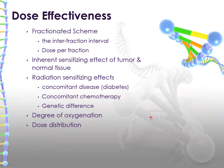Dose effectiveness depends on the fractionation scheme, the interfraction interval, dose per fraction, inherent sensitizing effect of tumor and normal tissue, radiation sensitizing effects, concomitant disease like diabetes, concomitant chemotherapy, genetic differences, degree of oxygenation, and dose distribution.